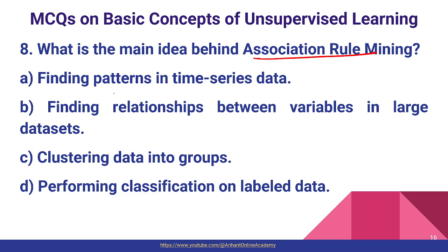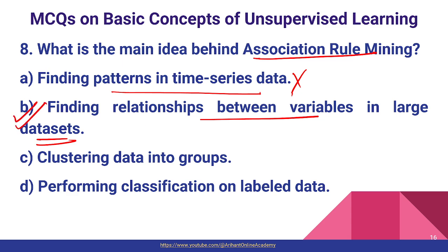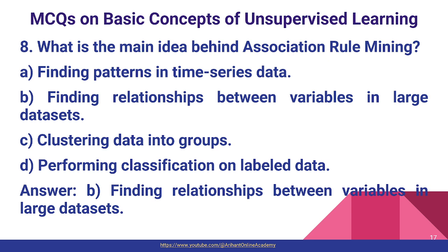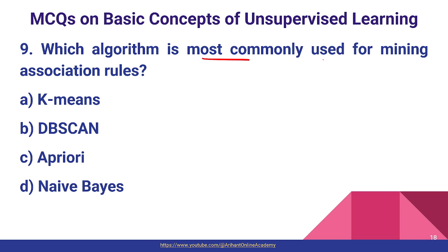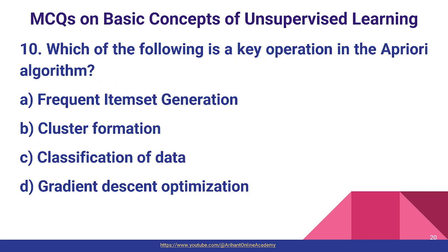Question number eight: what is the main idea behind association rule mining? Finding relationships between variables in large datasets — option B is the most correct. Question number nine: which algorithm is most commonly used for mining association rules? The Apriori algorithm is most commonly used for mining association rules. Question number ten: which of the following is a key operation in the Apriori algorithm? Frequent itemset generation — option A is correct.